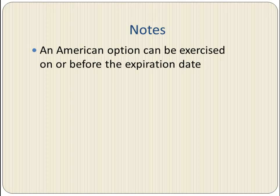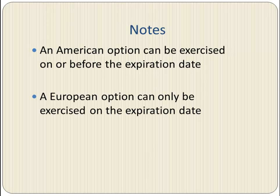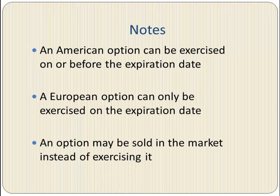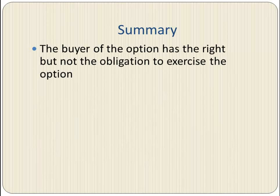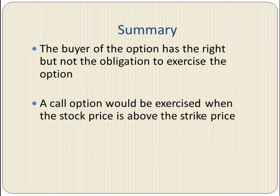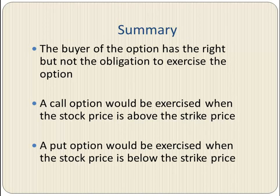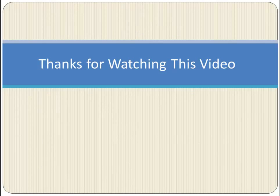A couple of notes to keep in mind: an American option can be exercised on or before the expiration date, while a European option can only be exercised on the expiration date. An option can also be sold in the market instead of exercising. In summary, the buyer of the option has the right but not the obligation to exercise the option. A call option would be exercised when the stock price is above the strike price; a put option would be exercised when the stock price is below the strike price. Thanks for watching — feel free to post any comments, questions, or suggestions.